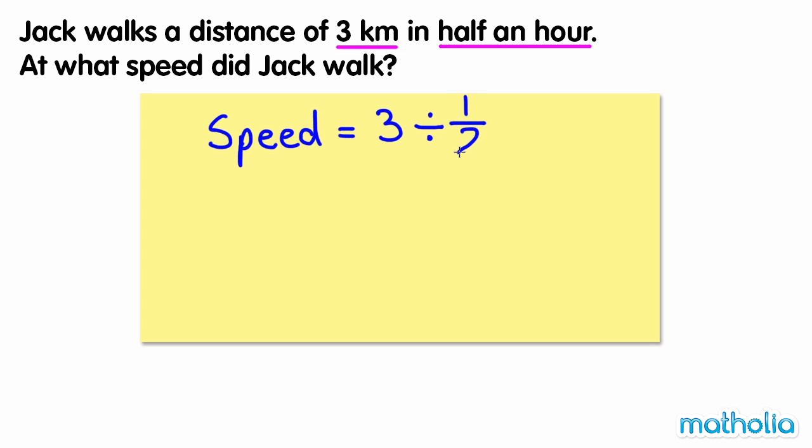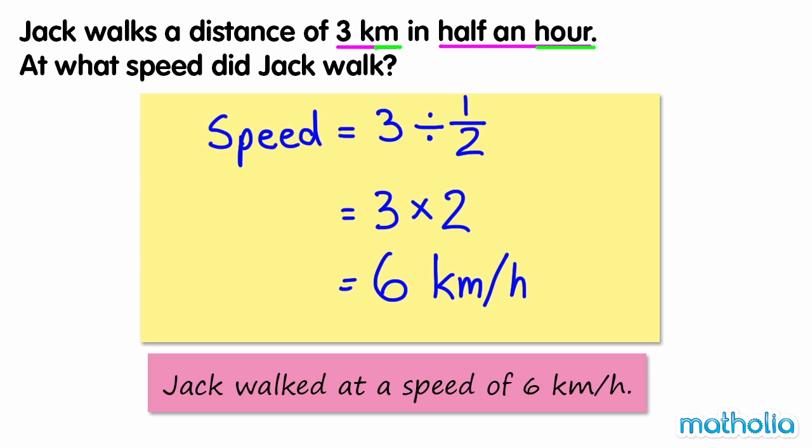Dividing by one half is the same as multiplying by 2. 3 times 2 equals 6. Our units are kilometers and hours. So Jack walked at a speed of 6 kilometers per hour.